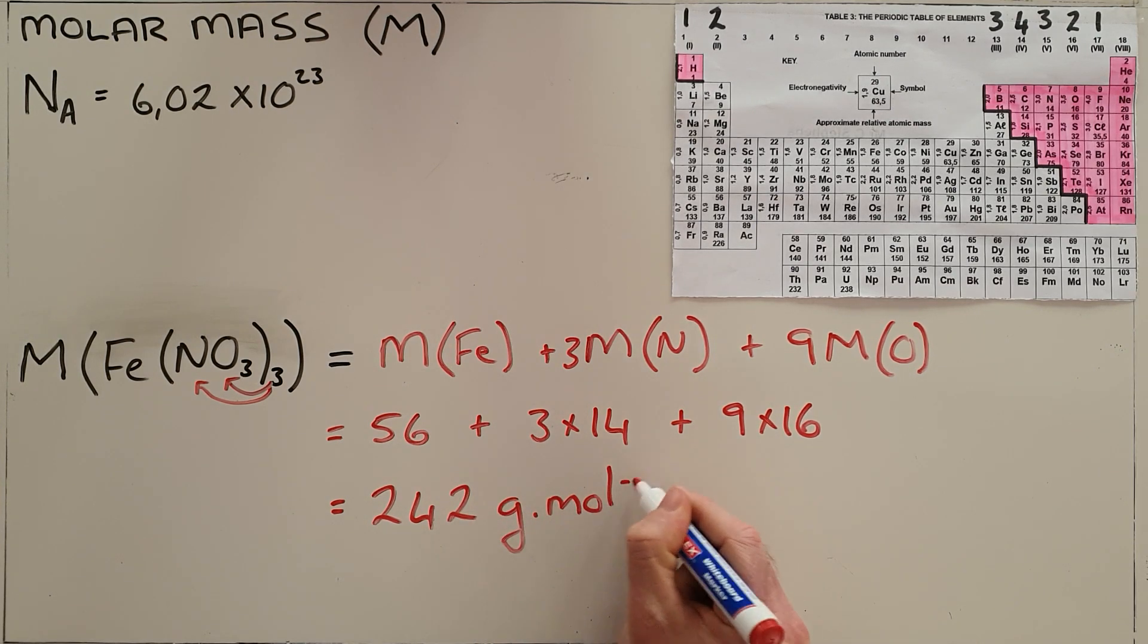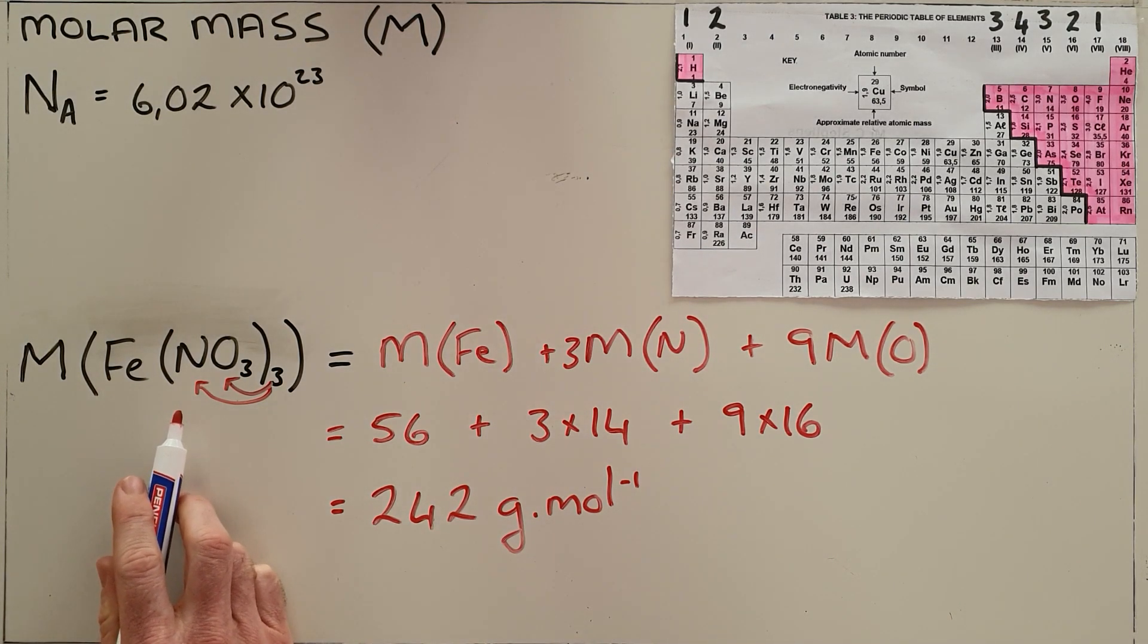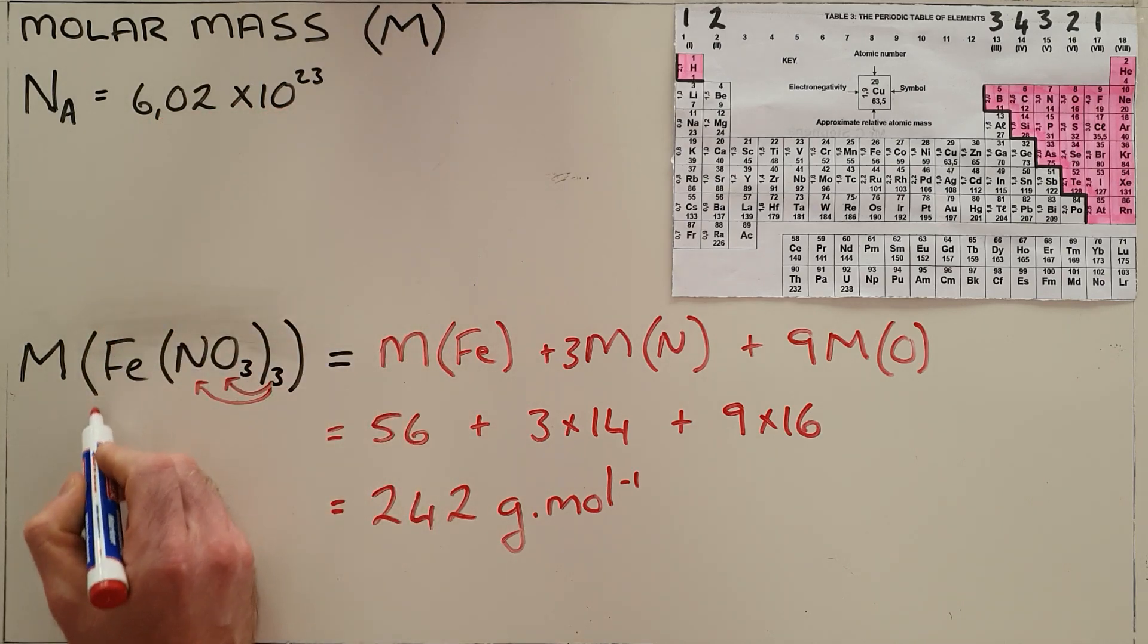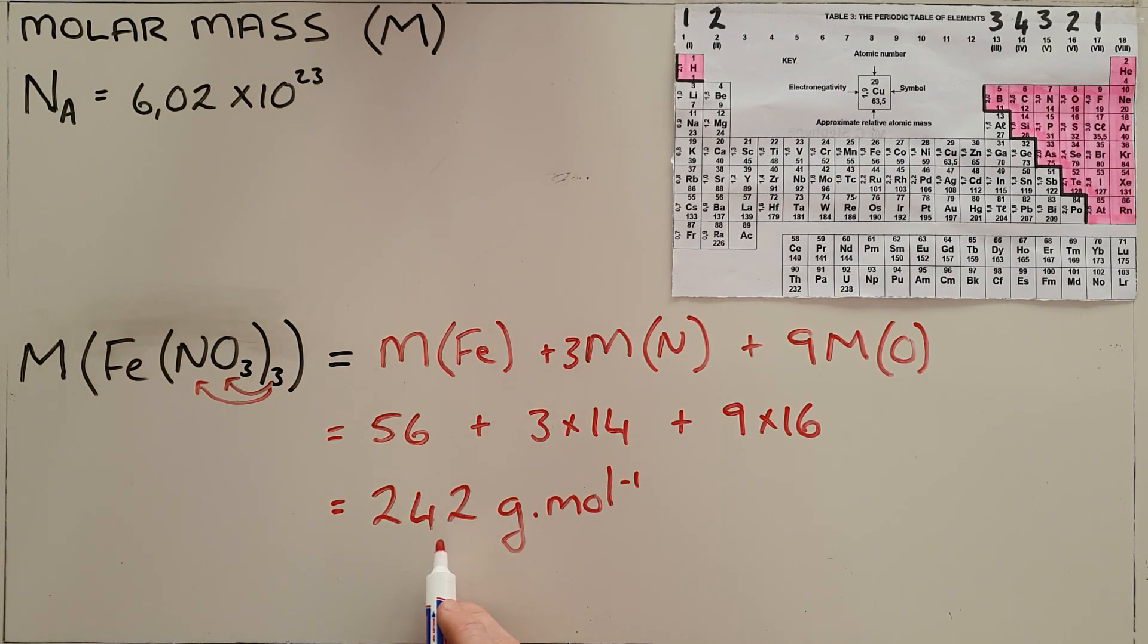What this tells us is that if I had one mole of iron nitrate, I would have 6.02 times 10 to the power of 23 molecules of iron nitrate, and that would have a mass of 242 grams.